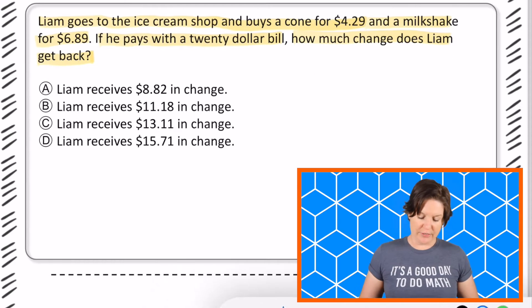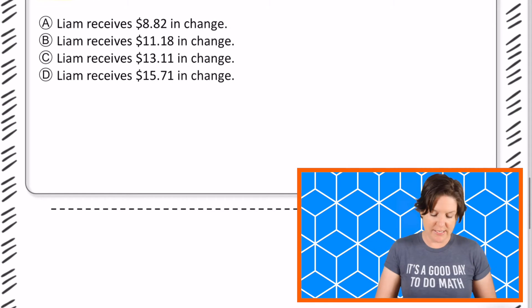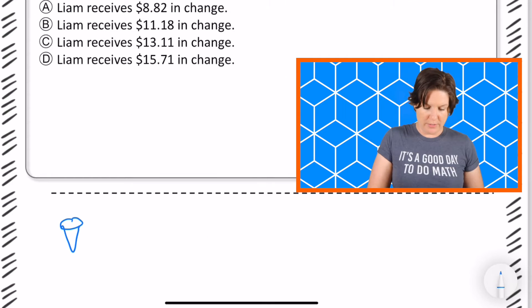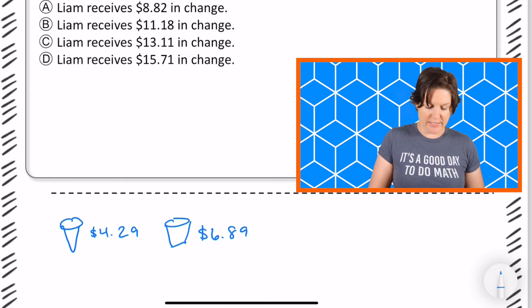So to do this I'm going to tackle that first sentence. First he buys a cone, I'm going to kind of draw this out, a little cone for $4.29 and a little milkshake for $6.89.